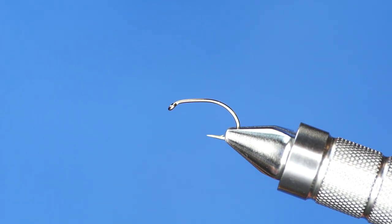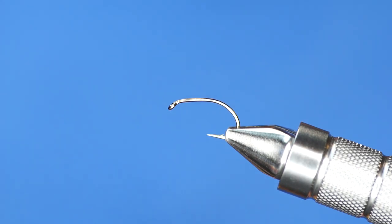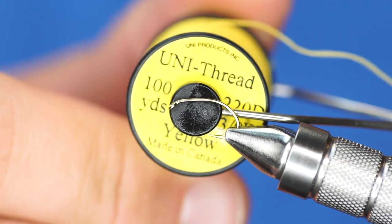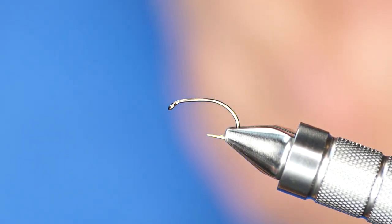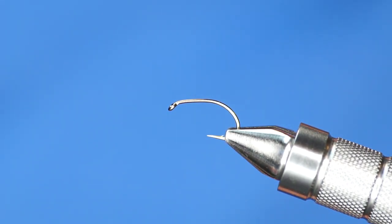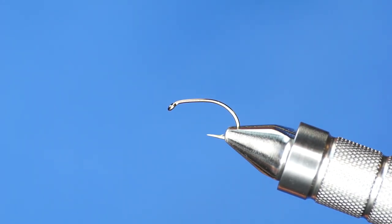I've got a size 12 scud hook in the vise, and I'm going to be using two threads on this. This is uni thread 3-0 in yellow, very similar to the uni stretch that they make. So I'll be making the body out of that. And then instead of wrapping my soft tackle with this bigger, thicker thread, I'm going to switch it out and do something a little bit different. This is a variation of the partridge in yellow.